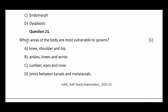Question number twenty-one: which areas of the body are most vulnerable to strains? Options: knee, shoulder, hip; ankles, knees, wrists; lumbar, eyes, nose; or joints between tarsals and metatarsals. The answer is ankles, knees, and wrists.